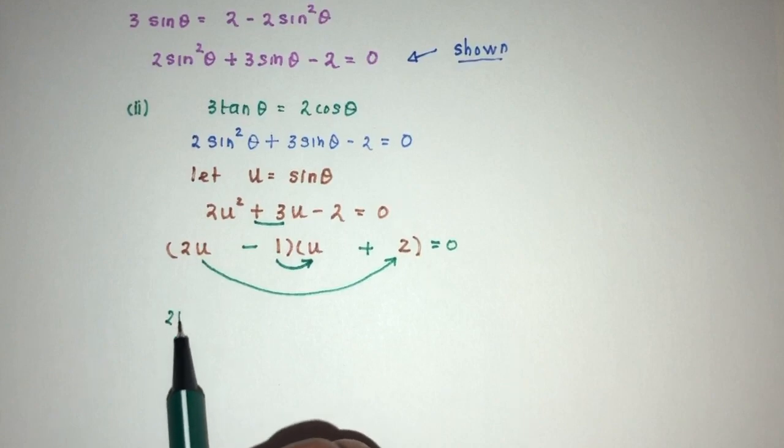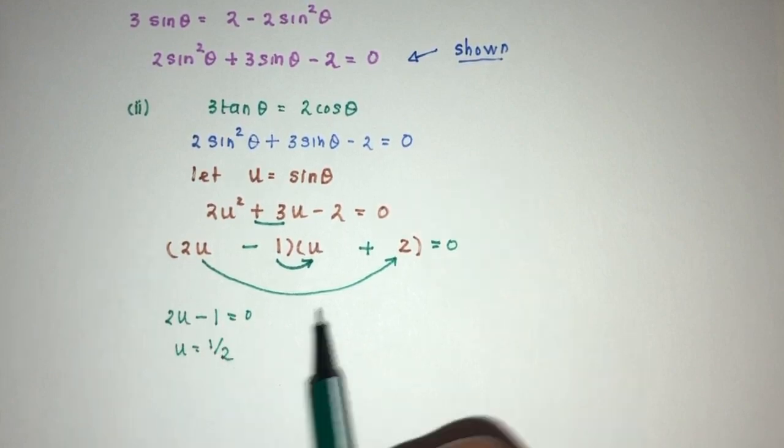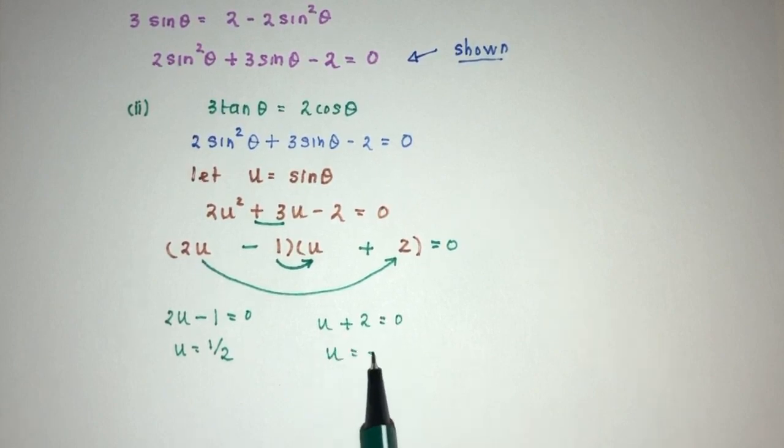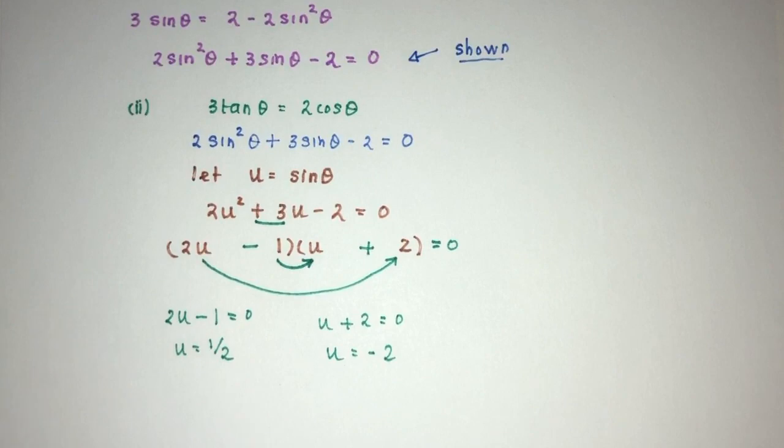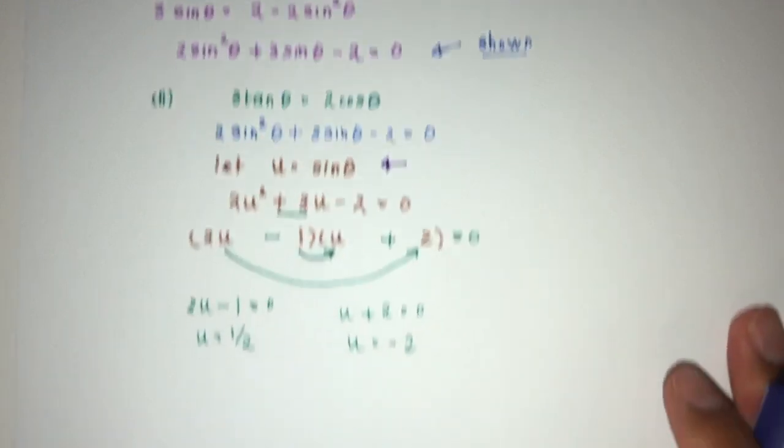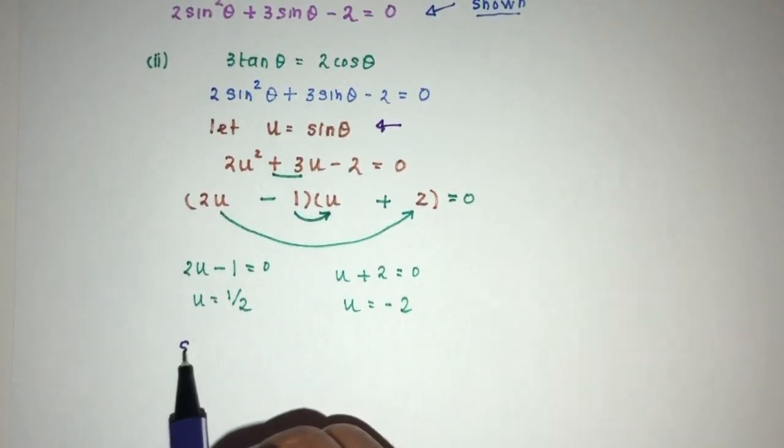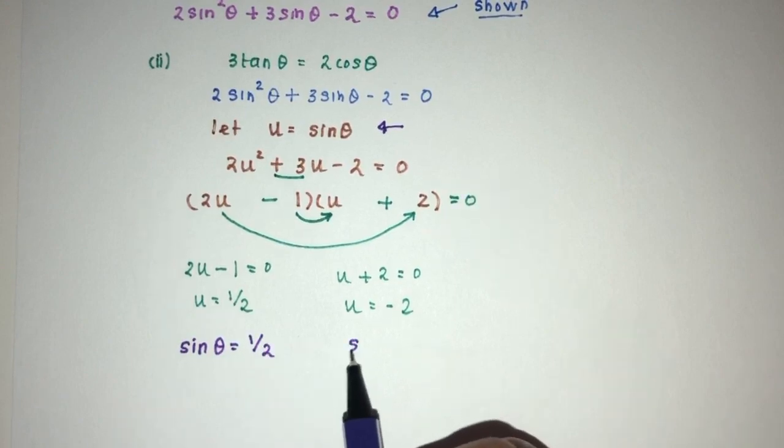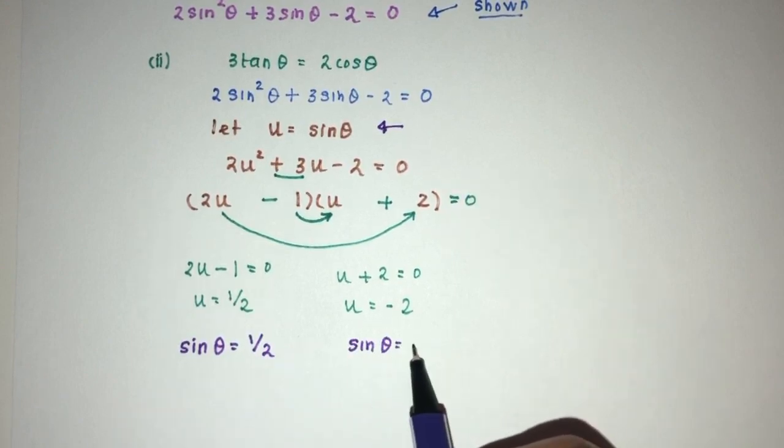So let's solve. First one will be 2u - 1 = 0. So u will be the value of 1/2. u + 2 = 0. u will be the value of -2. Now, again, we're not trying to find the value of u. We're trying to find the value of θ. So we place this one back in the main equation. So u = sin(θ). So sin(θ) is the value of 1/2 and sin(θ) is the value of -2.